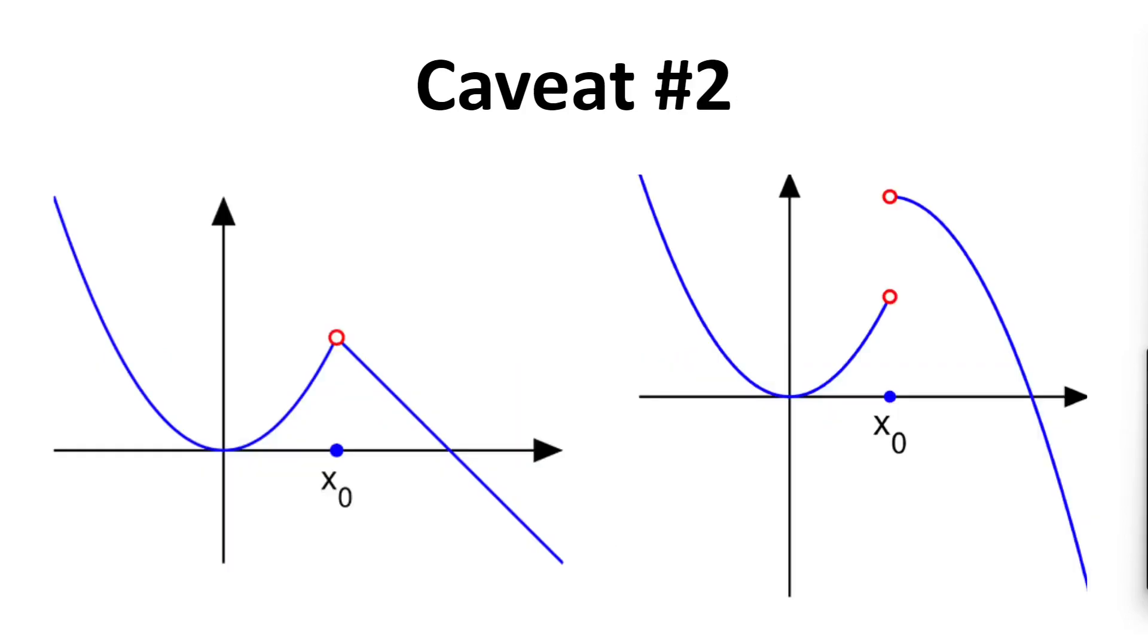Secondly, the class of functions that can be approximated are the continuous functions. And if the function has discontinuities, then the neural network will not be able to approximate it in most cases.